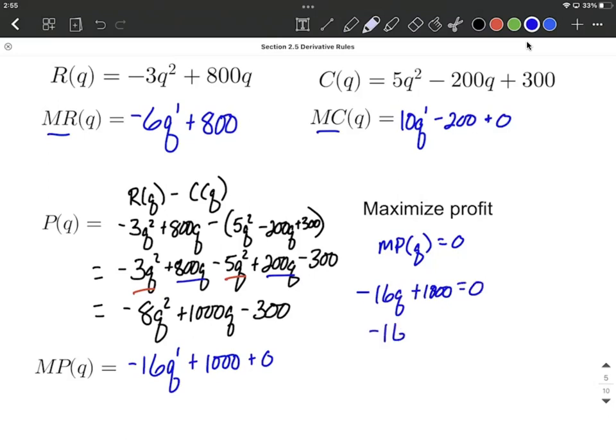So a linear equation shouldn't be too bad. I'm going to go ahead and subtract 1000, move it to the other side, and divide both sides by negative 16. So 1000 divided by 16, or negative over a negative makes a positive. We want our quantity to be 62.5.